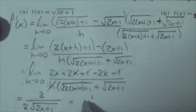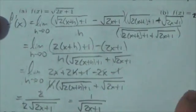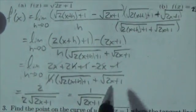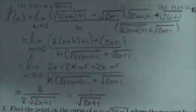These twos are going to cancel each other out. I'm left with 1 over the square root of 2x plus 1. That is the derivative that we are looking for.